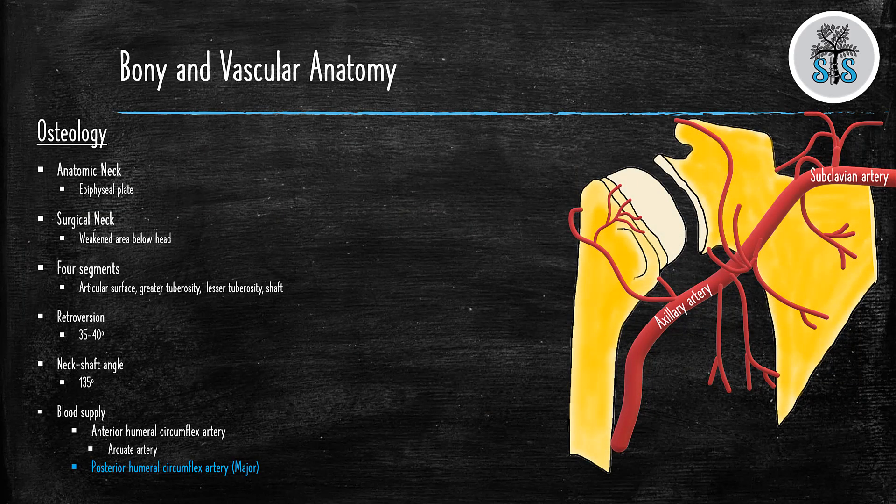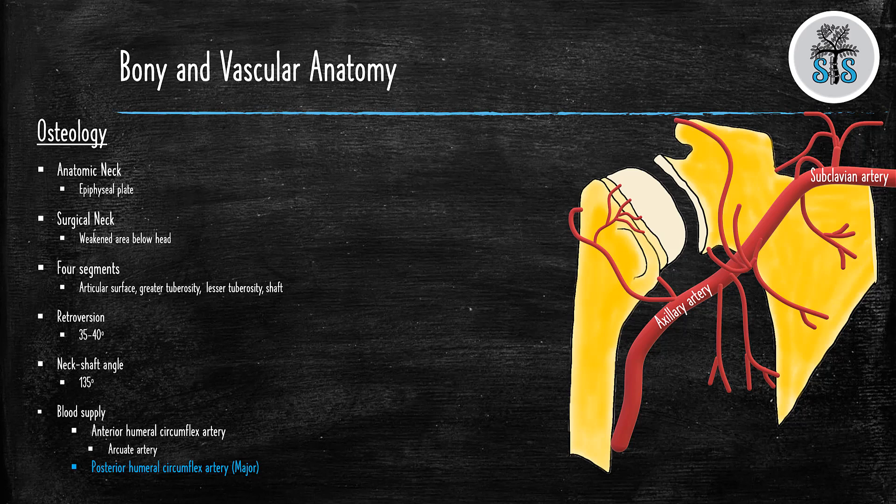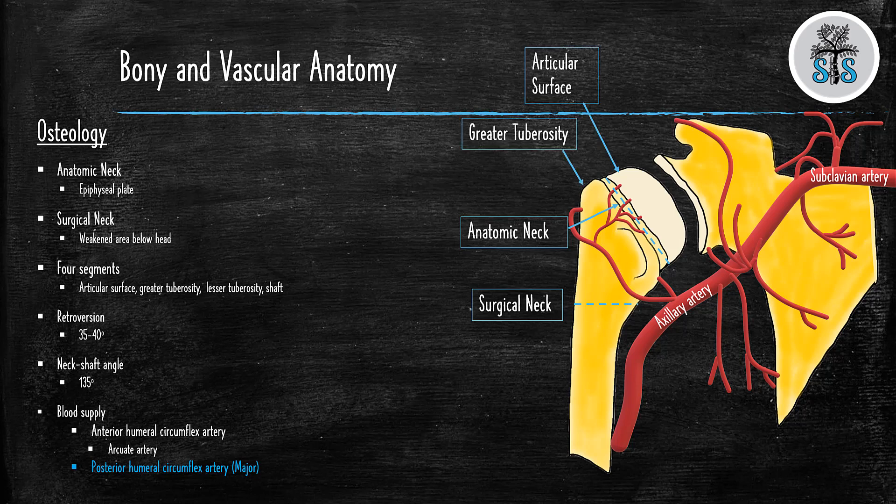To understand proximal humerus fractures, you must understand some basic anatomy surrounding the shoulder. First, we will talk about the bony anatomy. The proximal humerus is composed of various parts and regions. There is the anatomic neck, which is the location of the epiphyseal plate, the surgical neck, and then the four segments or parts of the proximal humerus, which are the articular surface, greater tuberosity, lesser tuberosity, and the shaft.